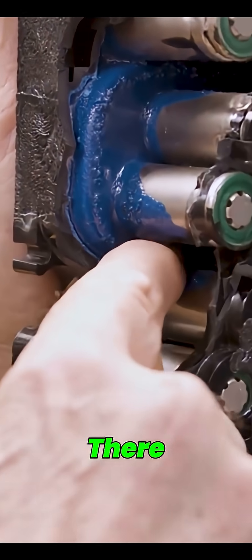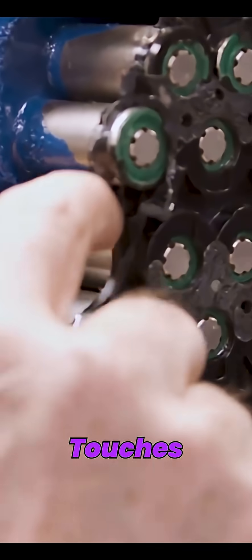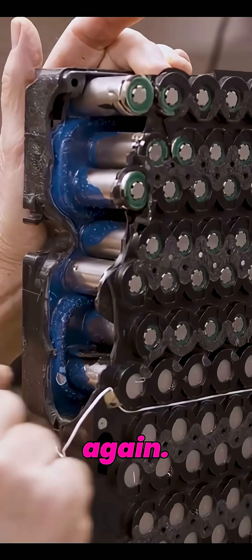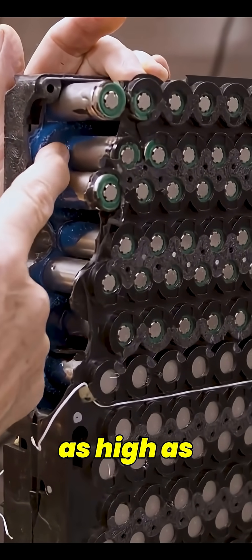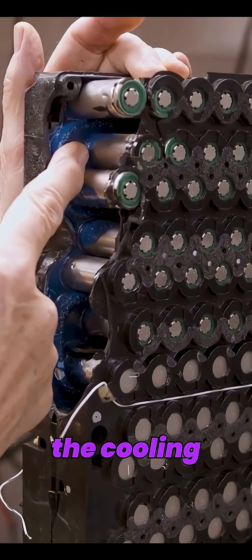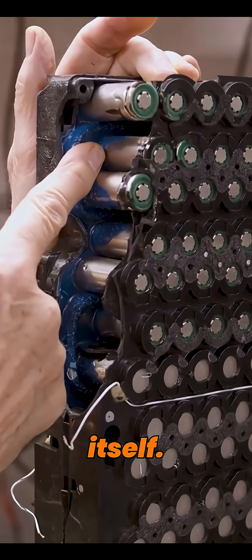And there it is there. It goes back around, touches these two cells, loops again. And you can see the thermal potting compound is only as high as the cooling jacket itself.